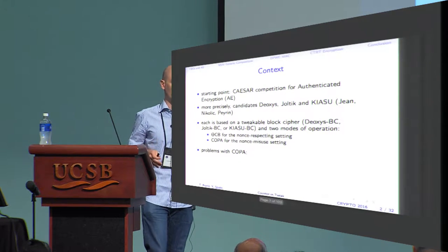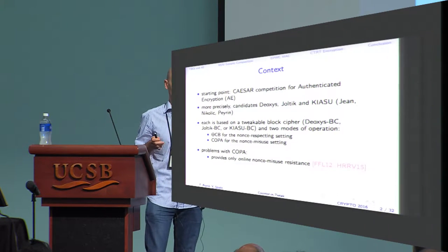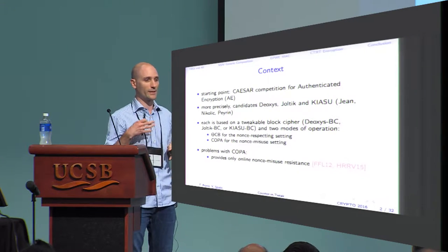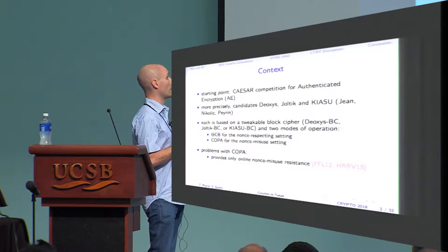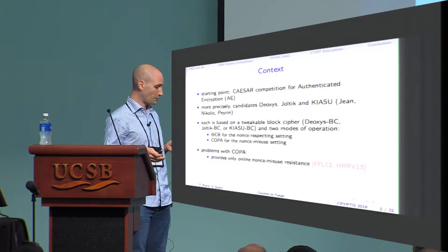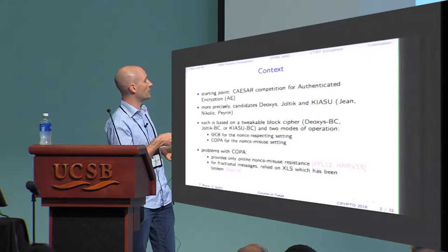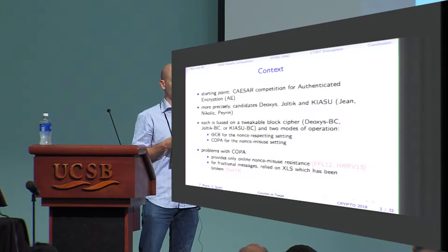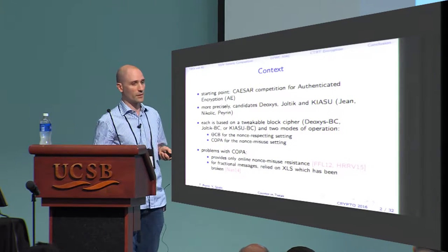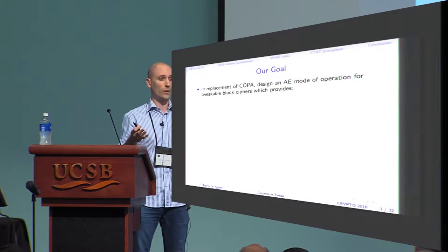There were some problems with COPPA. First, it provides only what is called online nonce misuse resistance, which is not the strongest nonce misuse resistance you can hope for, and this security definition is a bit controversial. There were also problems with a technique called XLS, which COPPA used to be based on, which has been broken by Nandi. So it has been fixed, but the designers wanted to find a new mode.